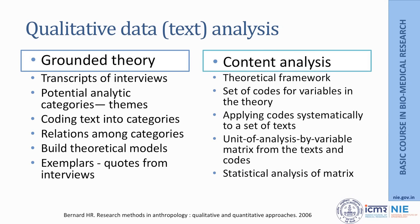There are various ways qualitative data can be analyzed. Qualitative data means text. Basically there are two methodologies: one is called the grounded theory approach and the other is content analysis. The grounded theory approach involves understanding the data and then developing theories based on it, whereas content analysis starts with a theoretical framework and then analyzes the data to understand the theory.